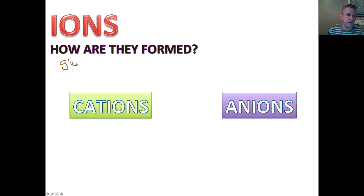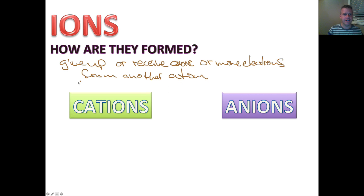How are they formed? They either give up or receive one or more electrons from another atom. These are typically valence electrons. Valence electrons are the ones in the outermost shell, and we either give one up or gain one to make our outermost shell most stable.